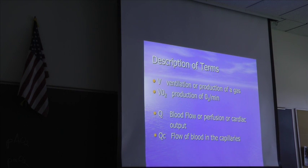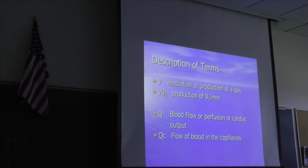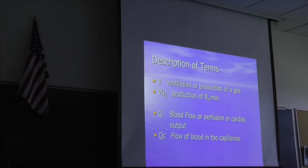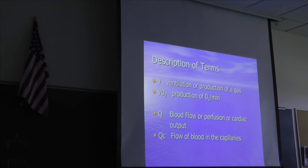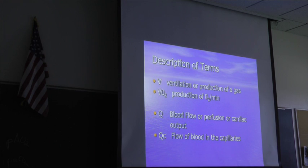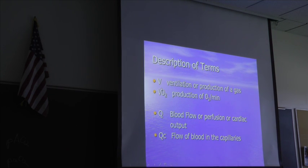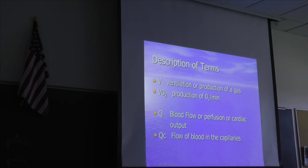Then there are some more terms. There are V's and Q's, and there's supposed to be a dot over each one. I still can't figure out how to get the dots above the letters, so they kind of float all over the place. On your notes, if you could add a dot above the V — the two V's — and above the Q's.